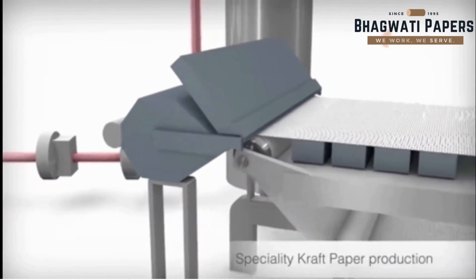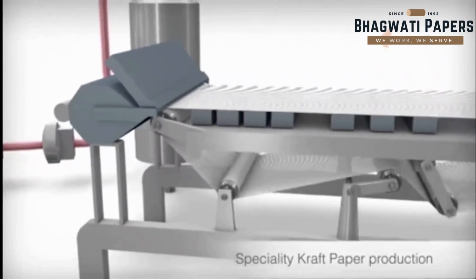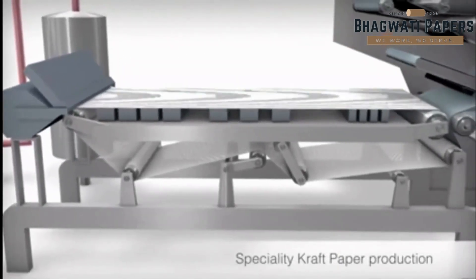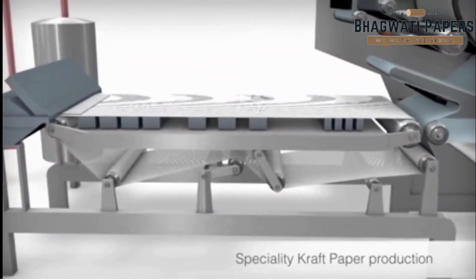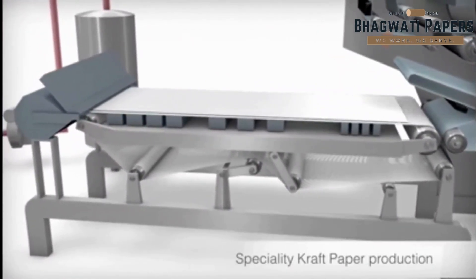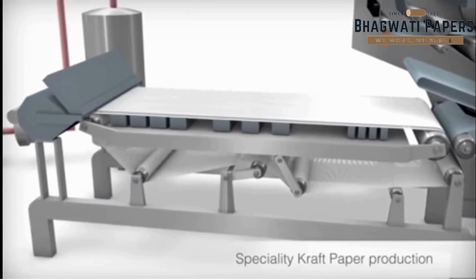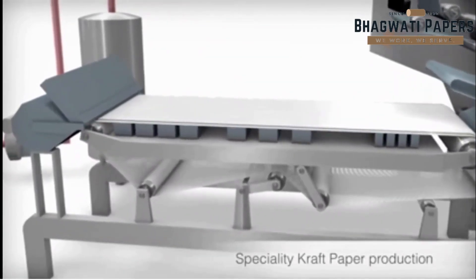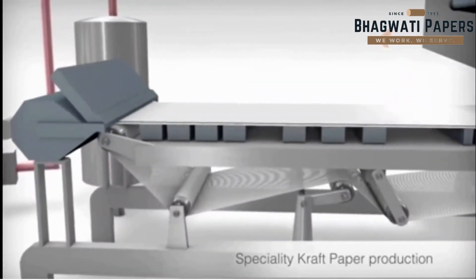The wire section consists of an endless running wire and dewatering elements. The highly diluted stock comes out of the head box and is evenly distributed on the running wire. The fibers remain on the wire while the water goes through it.